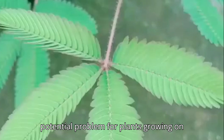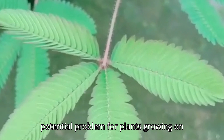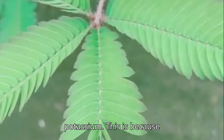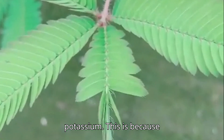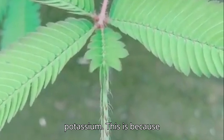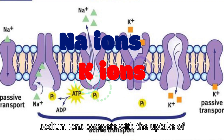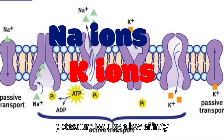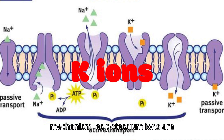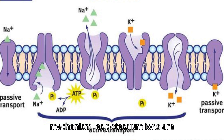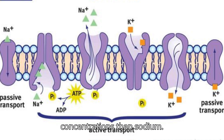Another potential problem for plants growing on saline soils is obtaining enough potassium. This is because sodium ions compete with the uptake of potassium ions by a low-affinity mechanism, as potassium ions are commonly present in soils in much lower concentrations than sodium.